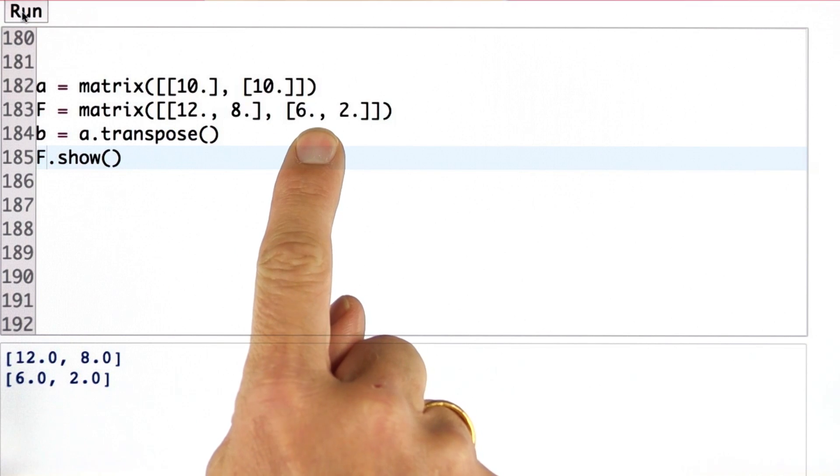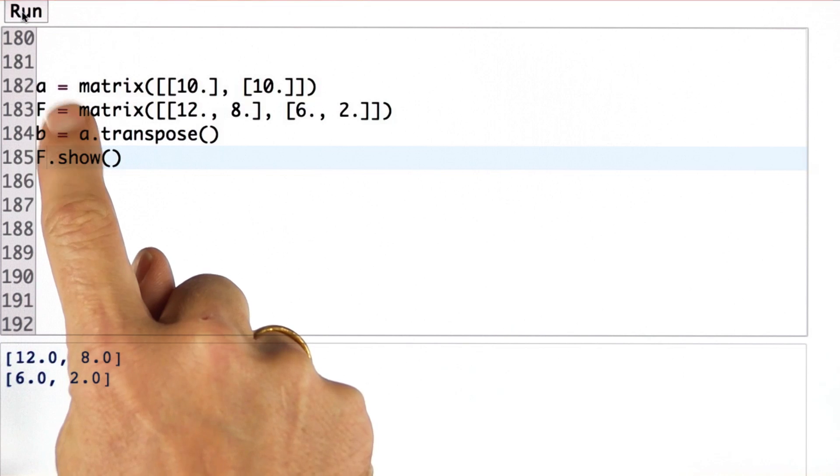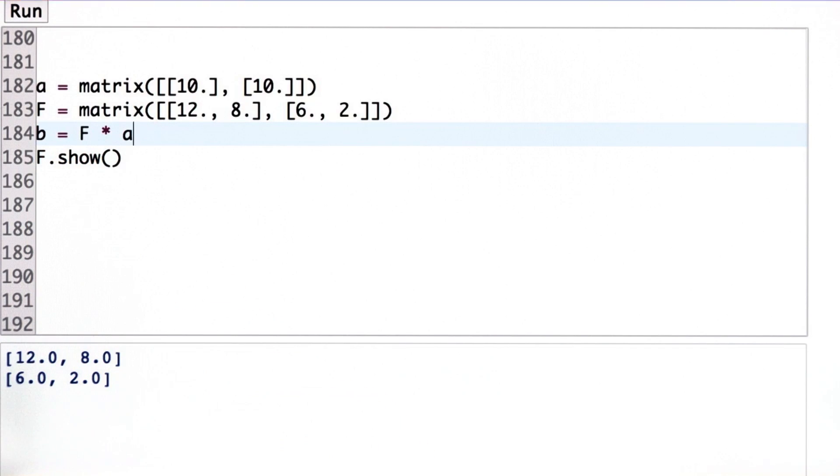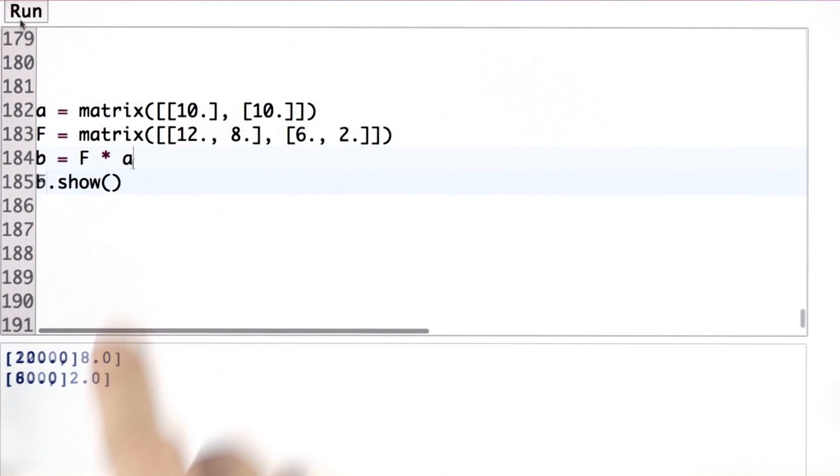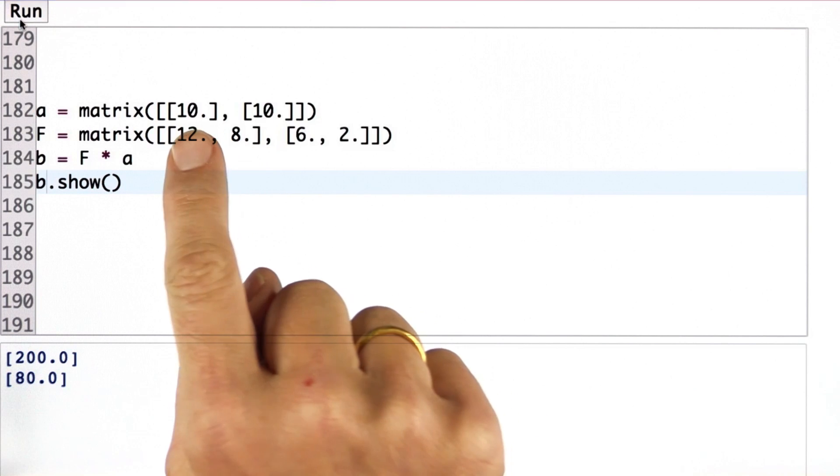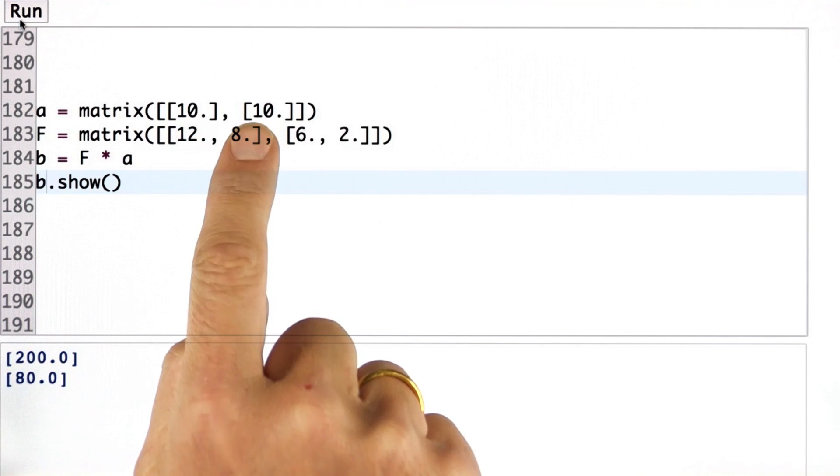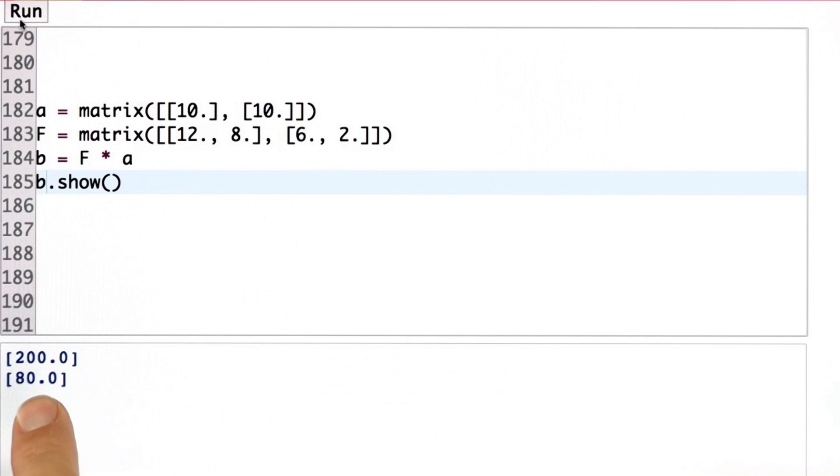These are these values over here. And we can multiply f and a. So here b equals f times a. And if we show the result, we get the vector 280. That's obtained by 10 times 12 plus 10 times 8 is 200, times 6 plus 10 times 2 is 80.